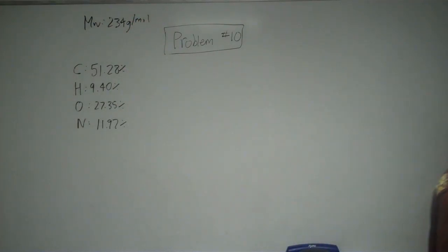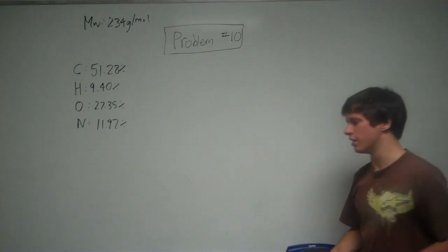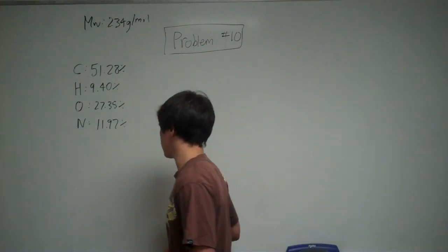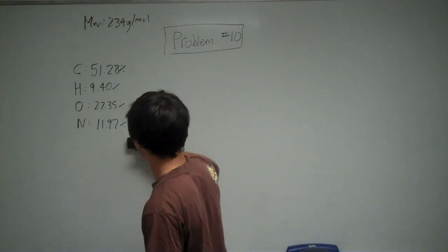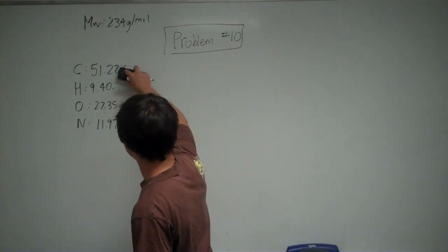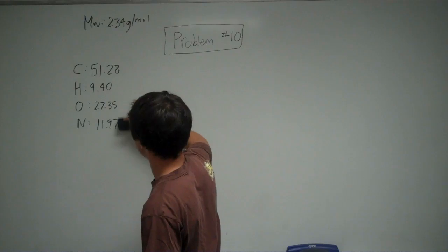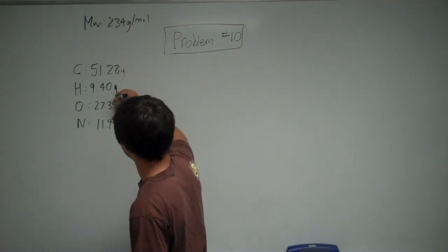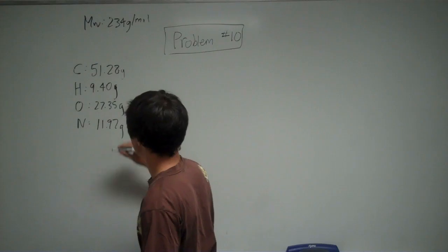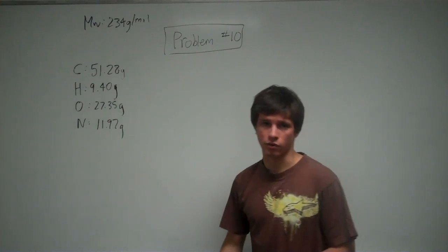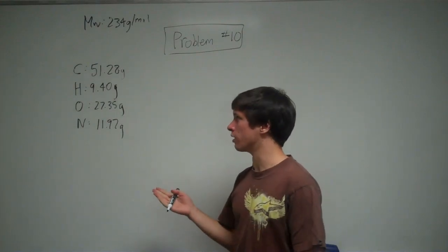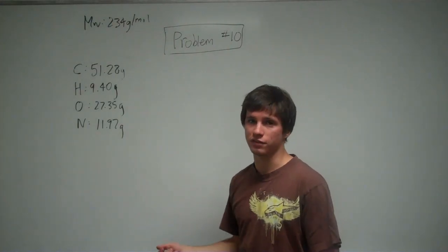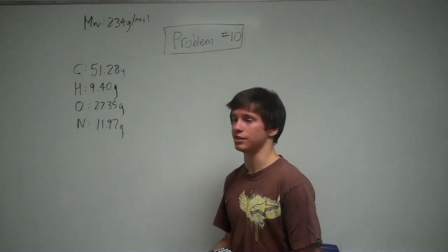So what you can do in this case, you can assume, let's suppose that we have 100 grams of this compound. So what would that tell you? Well, since, for example, carbon, you have 51.28%, that means that you have 51.28 grams of carbon. And likewise, you can just change all those percentages to grams. Now, I could have said 50 grams, and then we would have had to find 51.28% of 50. I just think that 100 is the easiest number to work with.